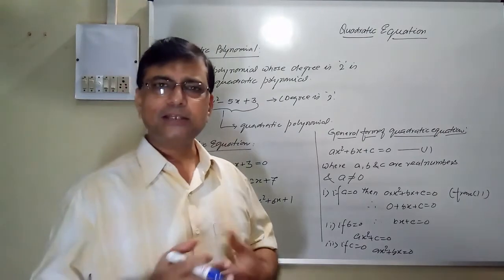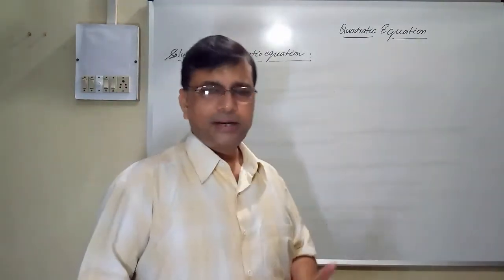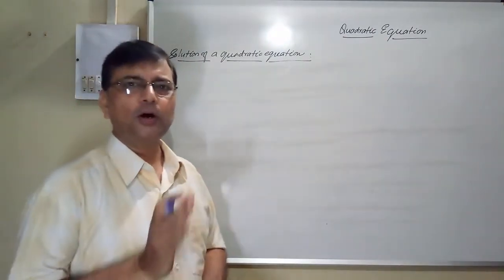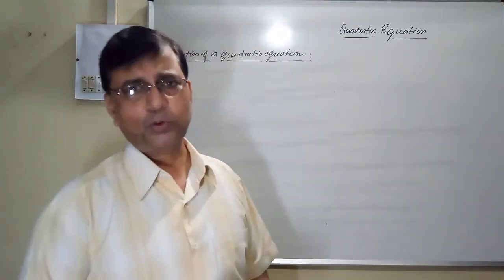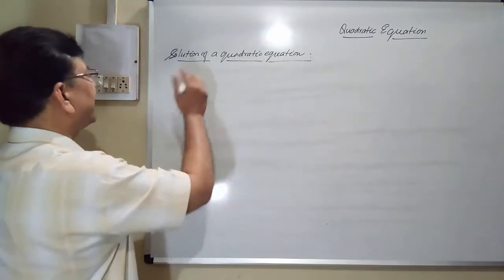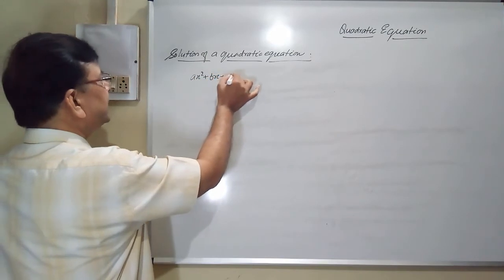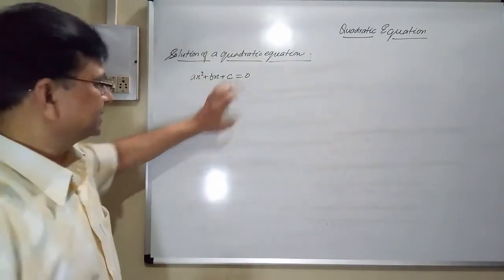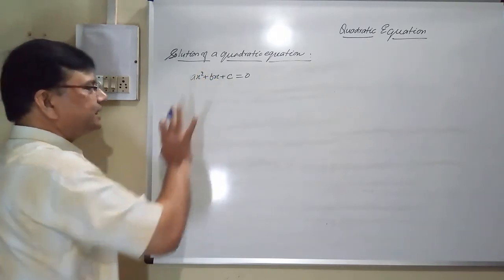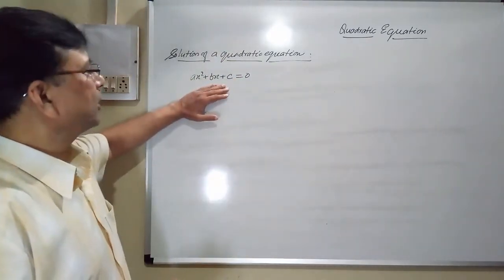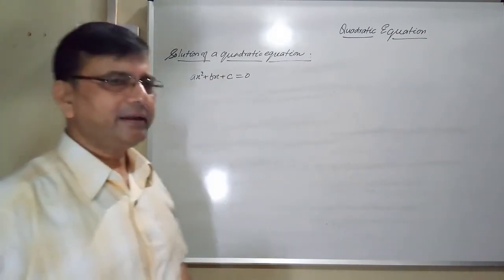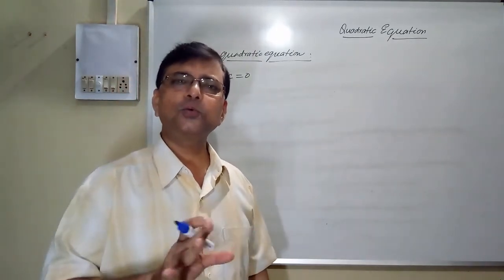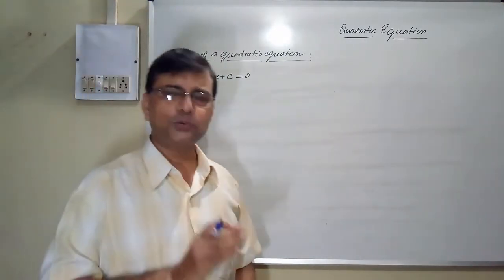Now I will talk about the meaning of the solution of a quadratic equation. The general form is ax² + bx + c = 0, where a, b, c are real numbers and a ≠ 0. The value of the variable which satisfies the equation is called the solution of the equation. These solutions are also called zeros of the quadratic equation.